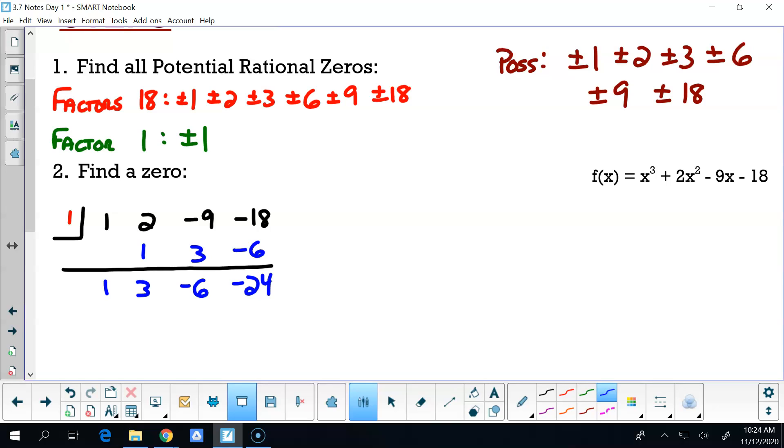So let's try two. One, two, negative nine, negative eighteen. One, two, four, eight. What's that, one, negative two, negative twenty. That one didn't look good. So let's try negative two.